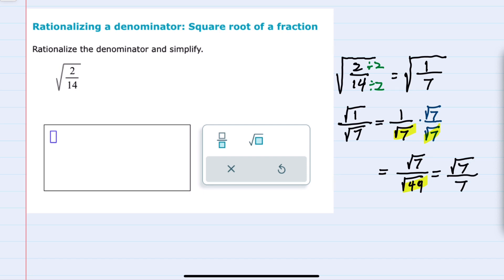And at this point we no longer have a radical in the denominator. So we have rationalized and we have simplified as much as possible. So this square root of 7 over 7 is our rationalized and simplified expression.